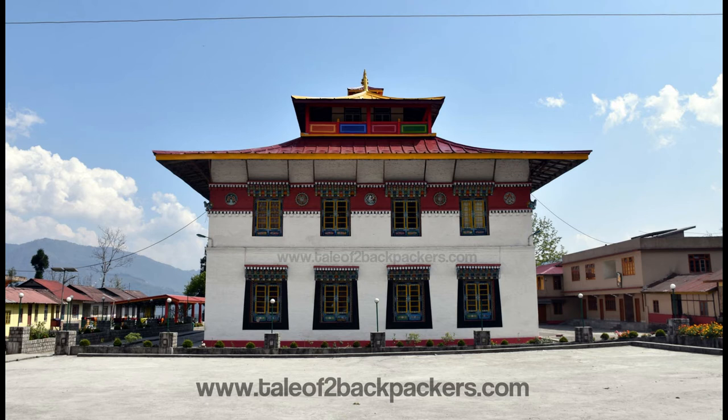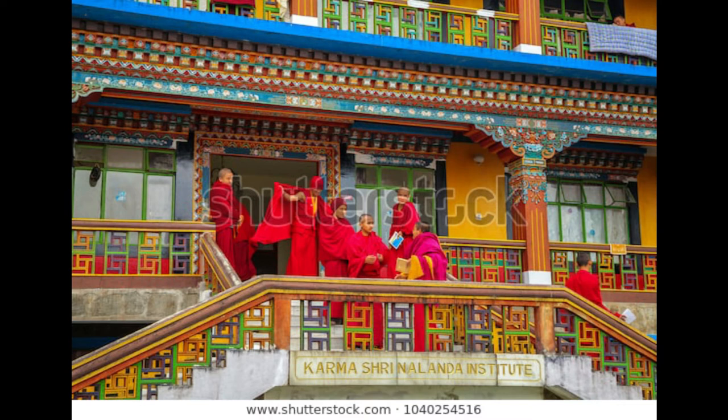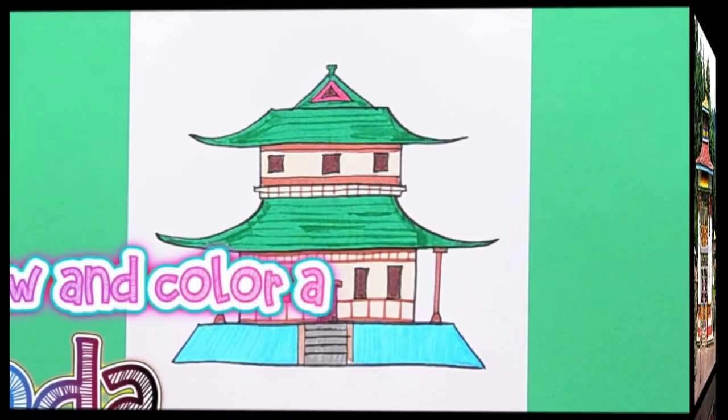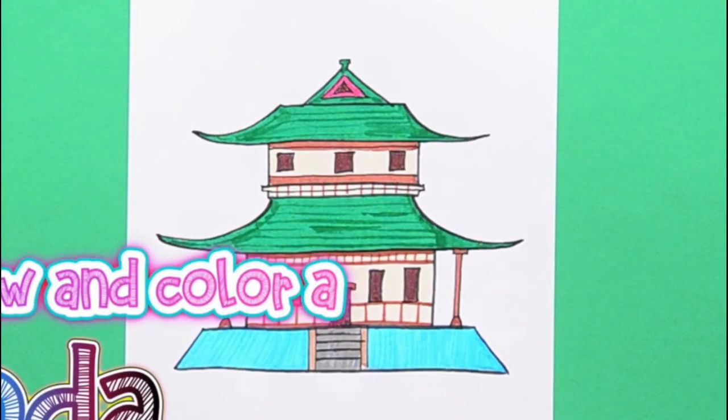A pagoda is an ancient temple which is usually a pyramidal tower or cone-shaped structure with an upward curving roof made of bricks, stone or wood. So let's learn how to draw it.